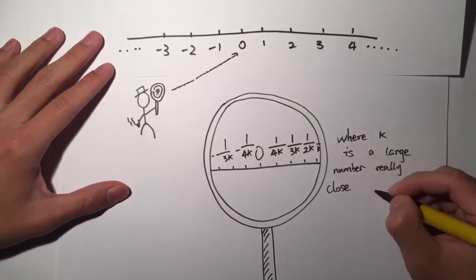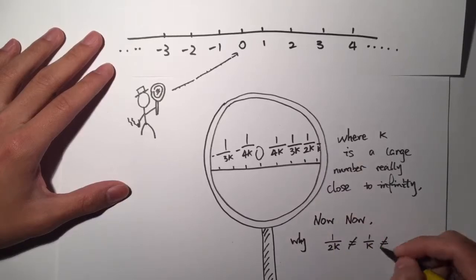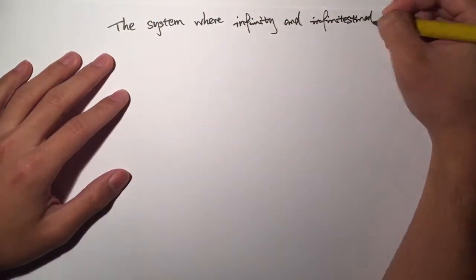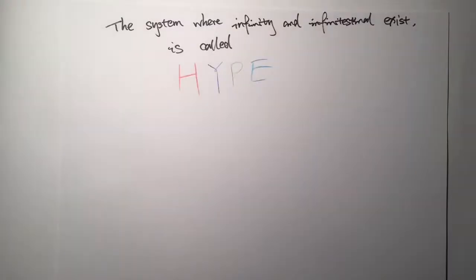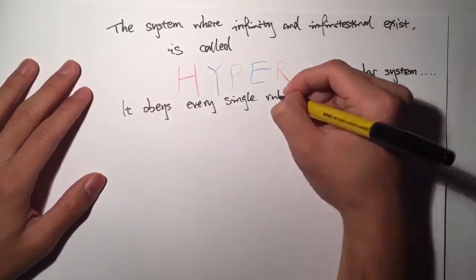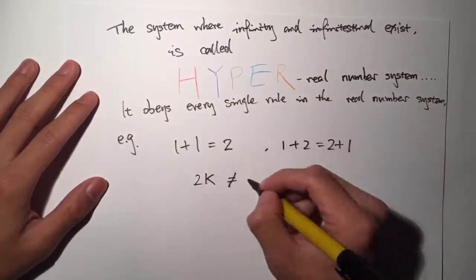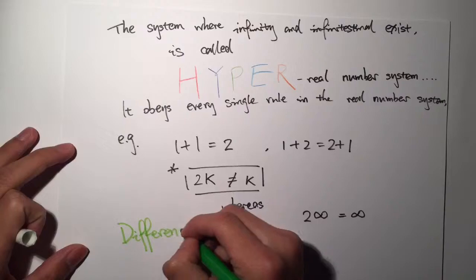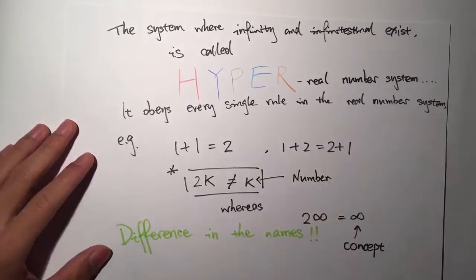If you look close enough to zero, you can see all these different infinitesimals. They're not equal to each other even though they're really close to each other. The hyperreal system is where infinity and infinitesimal exist.